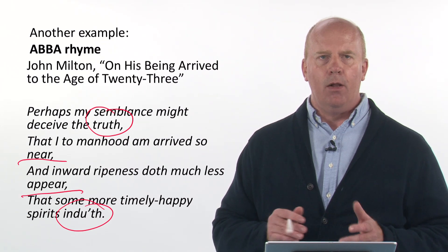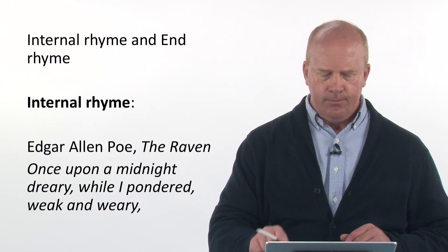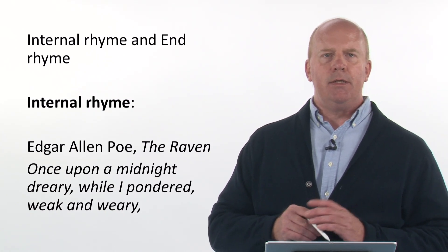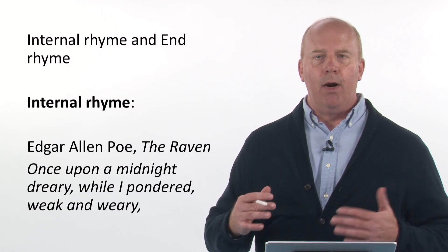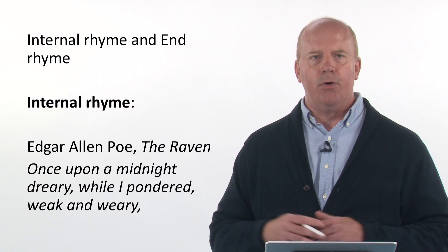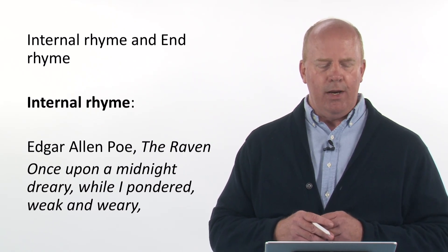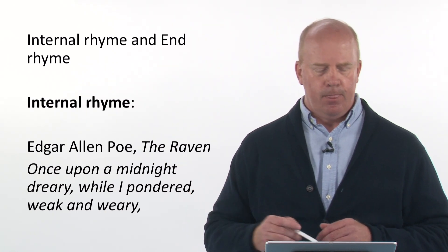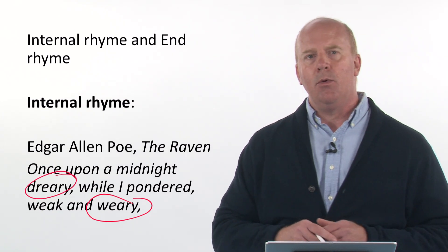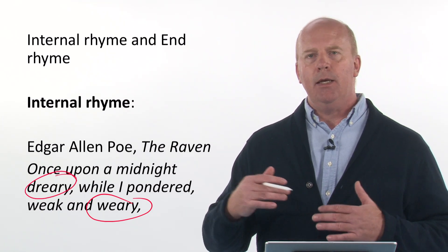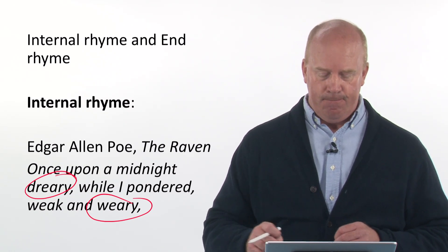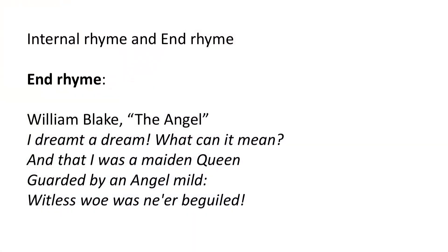There are two different types of rhymes: internal rhymes and end rhymes. An internal rhyme is a rhyme inside the line or verse. This example is from Edgar Allan Poe's 'The Raven': 'Once upon a midnight dreary, while I pondered weak and weary.' 'Dreary' and 'weary' rhyme within the internal part of the verse — that's an example of an internal rhyme.